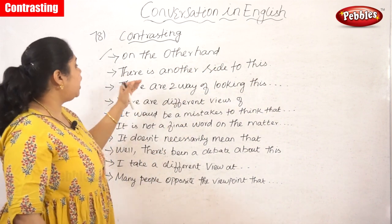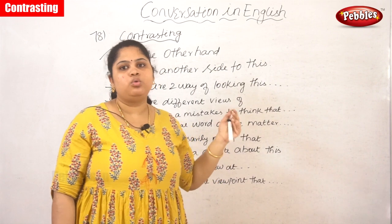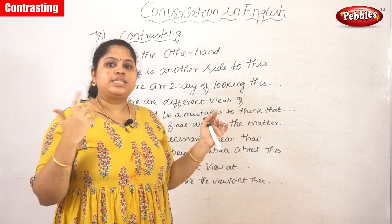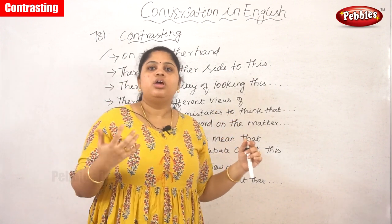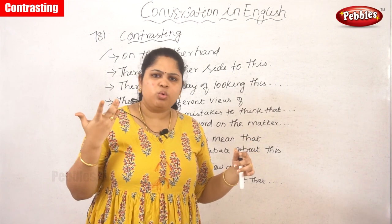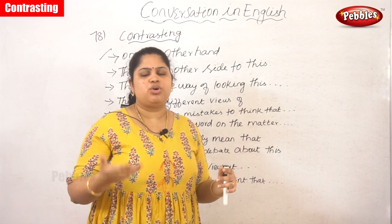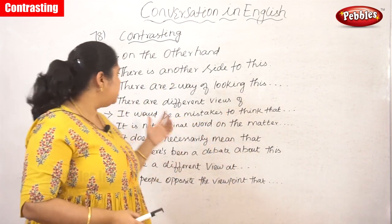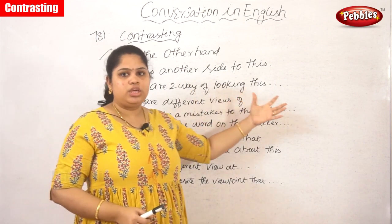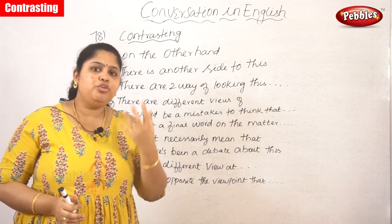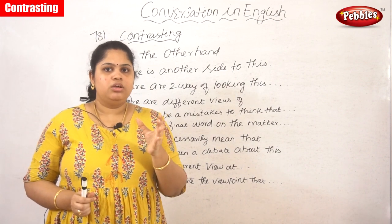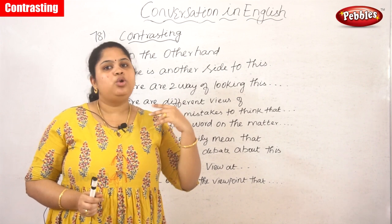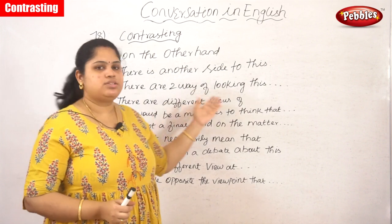Next phrase: 'There are two ways of looking at this.' Everything has a positive and negative, a merit and demerit. For example, if an opponent person is telling a contrasting opinion and keep on telling the disadvantages, you can come up with your merit point by saying, 'There are two ways of looking at this.' Or if you are talking about some technology that has two ways of processing, you can open your speech like this.